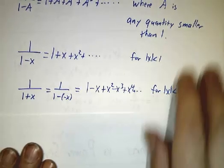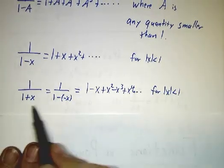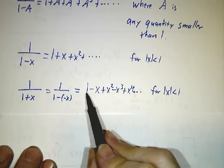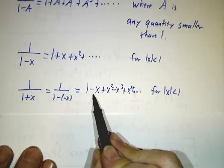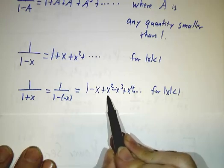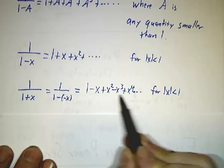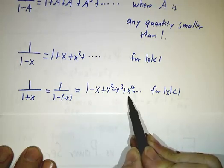We could do the same thing for 1 over 1 plus x because 1 plus x is just 1 minus minus x. So in this case, r is minus x, so we get 1 plus minus x, plus minus x squared which is x squared, plus minus x cubed which is minus x cubed, plus minus x to the fourth and so on.